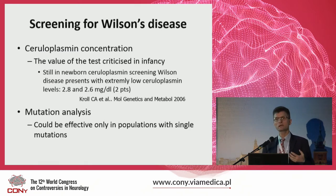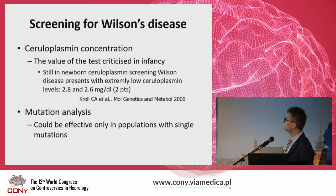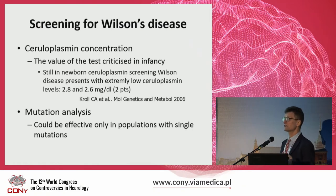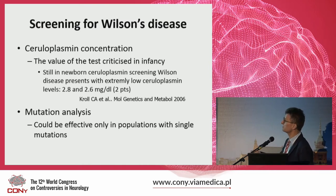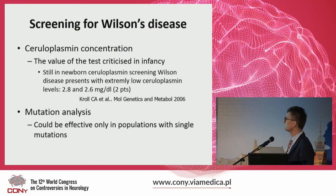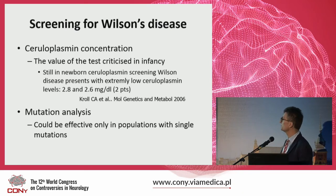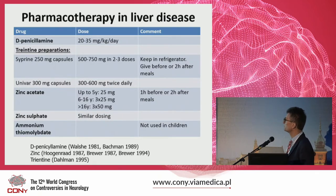The question is whether we can screen for Wilson disease. Screening could be applied better in childhood than in adulthood. Ceruloplasmin is not a very good tool for screening, at least in newborns, because newborn levels of ceruloplasmin are physiologically decreased. In case studies of Wilson disease patients from early records, they presented with extremely low ceruloplasmin — 2.8, 2.6 — so perhaps if you change normal values it may be useful, but not at present. Mutation analysis could be effective only in populations with a few most common mutations, which is not the case for most populations.